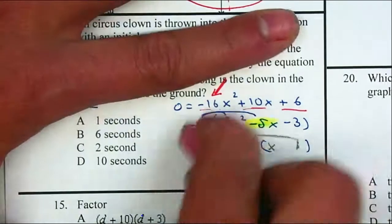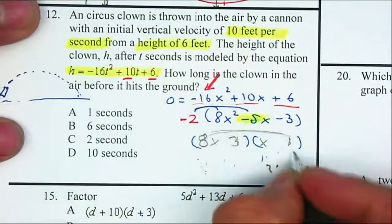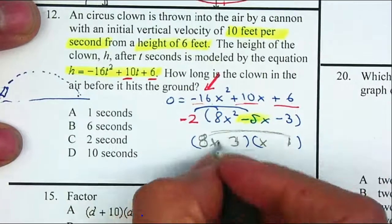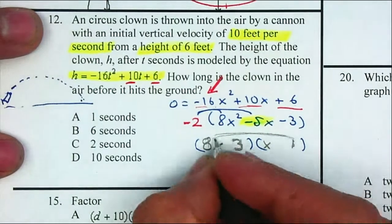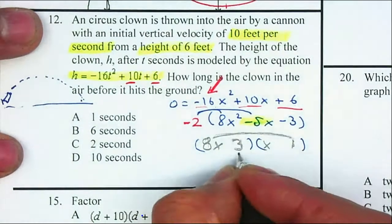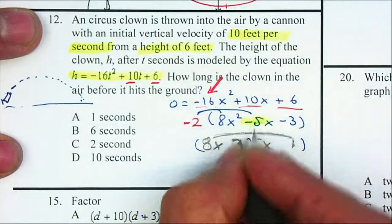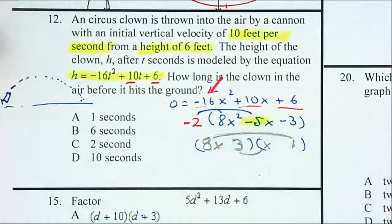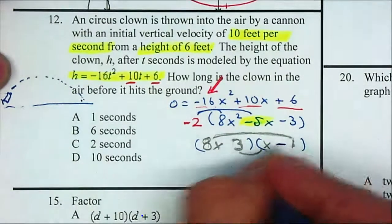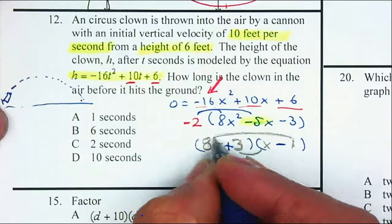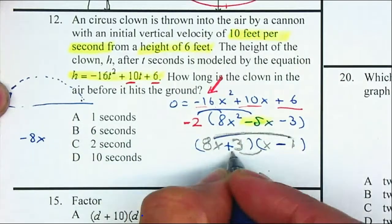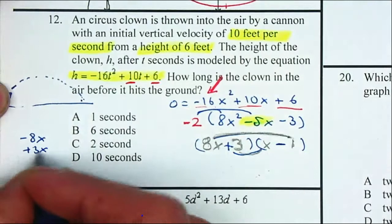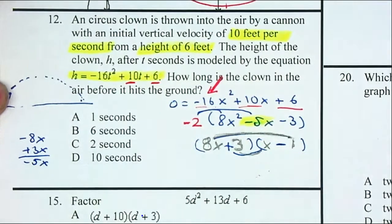Therefore, I need to use 8x and x. I'm going to use 8x and x. And I'm going to use 3 and 1, because 8 minus 3 gives me 5. Now I need to end up with a negative 5, so therefore I'm going to make this a negative and that's a positive. That gives me -8x and positive 3x gives me -5x, and that's what I need.